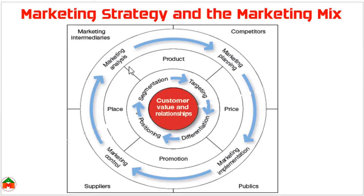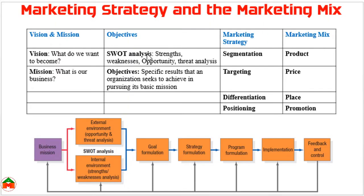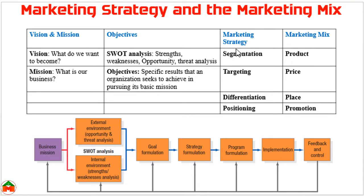From the previous slide, we learned that segmentation, targeting, differentiation, and positioning are the factors of marketing strategy. Product, price, place, and promotion are the factors of the marketing mix. Before addressing these marketing issues, there are some company-wide issues: vision, mission, and objectives. Vision indicates what the company wants to become, and the mission statement indicates the business nature of the company. After determining vision and mission, the company needs to determine its objectives and goals.